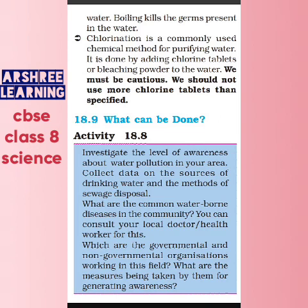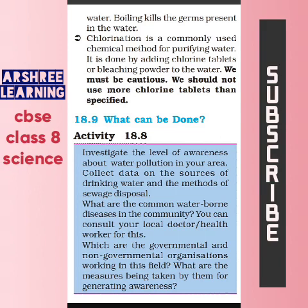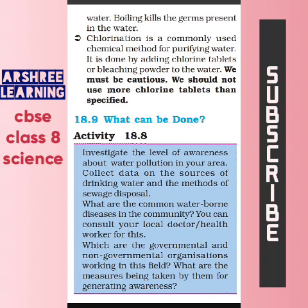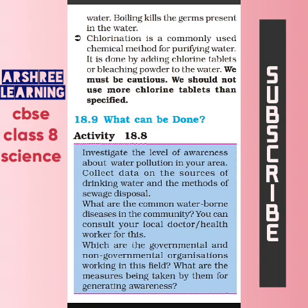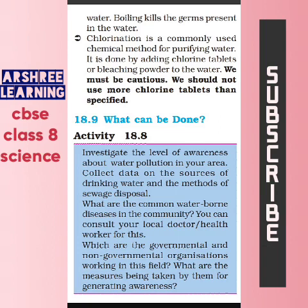Chlorine is added to the water in a fixed quantity. We cannot add excess chlorine because, although excess chlorine keeps the water transparent, if it is absorbed into our body it will make the bones weak. This is considered chlorine poisoning, so excess chlorine is not added.